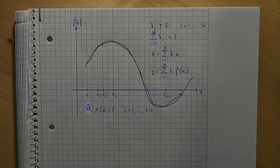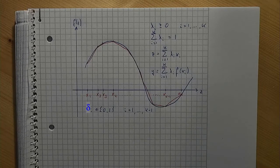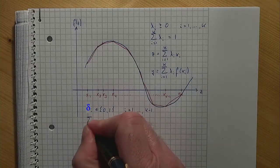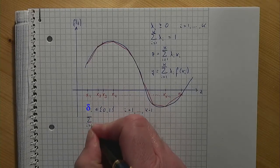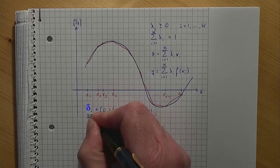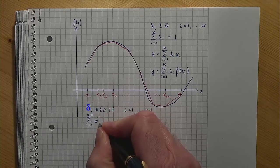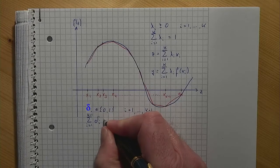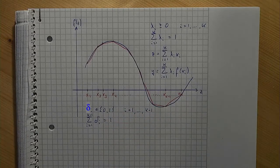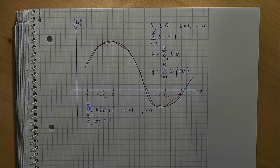One of these delta variables must have the value 1, all other delta variables must have the value 0. Formally, the following constraint guarantees that. This set of delta variables, by the way, is a special ordered set of type 1 — at most one of them is non-zero, and all other variables in the set are 0.